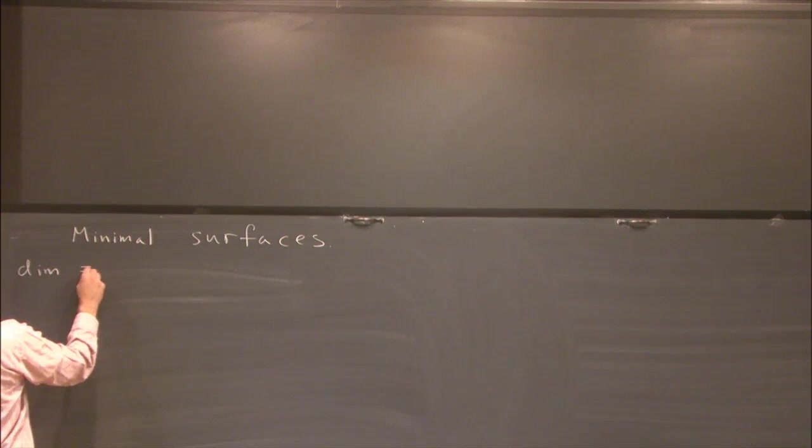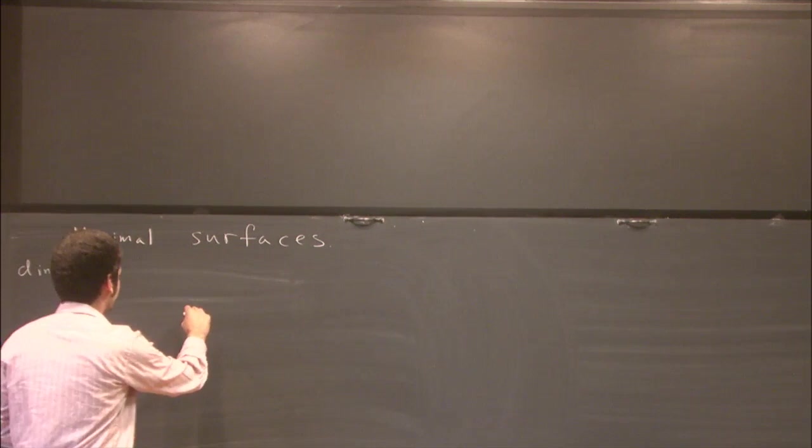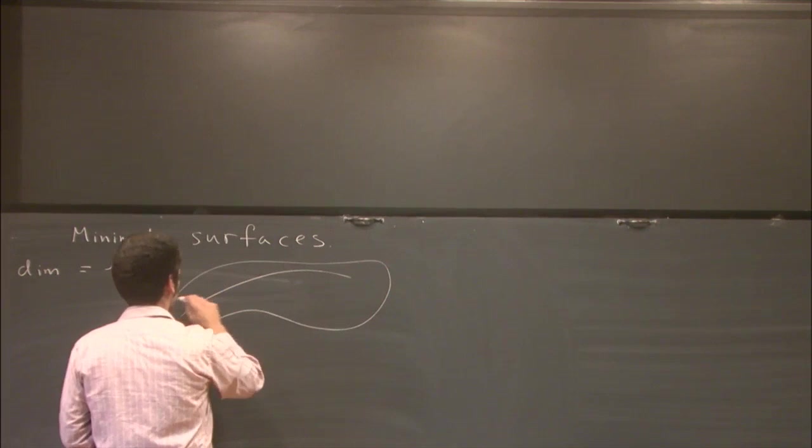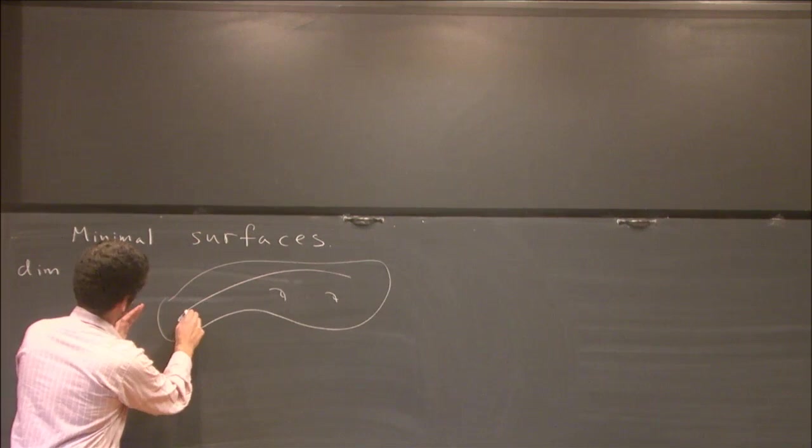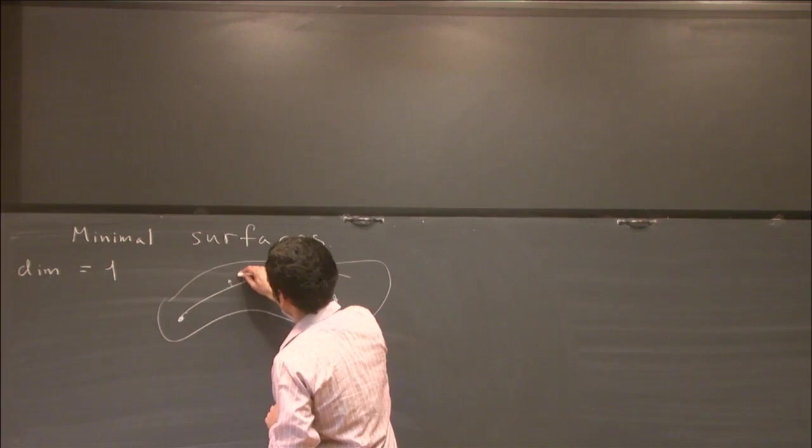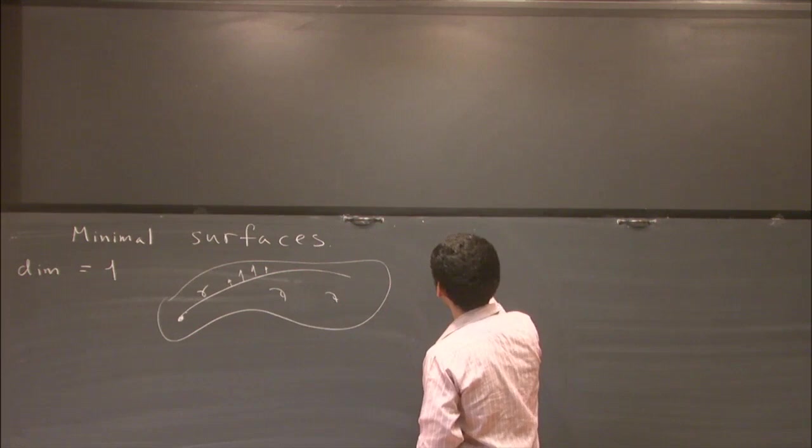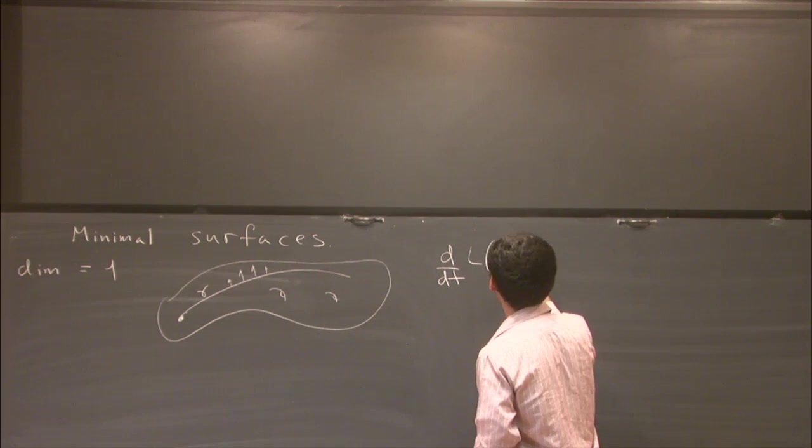Minimal surfaces of dimension one are called geodesics, and they are the generalization of a straight line. If you leave a point in a Riemannian manifold and you shoot a bullet, it's going to fly along a geodesic. The defining property is if you take some vector field and you try to vary your geodesic along that vector field, then the derivative of the length for this variation will be zero.